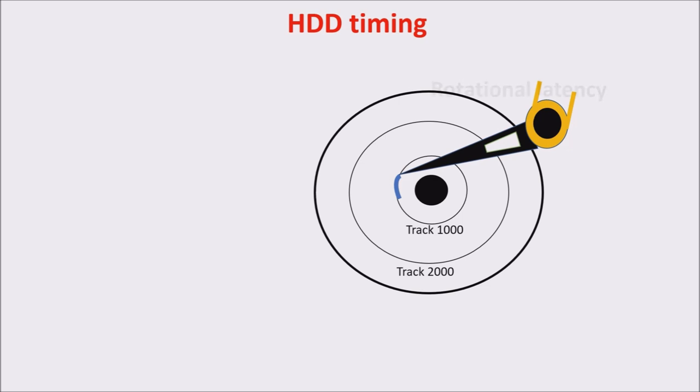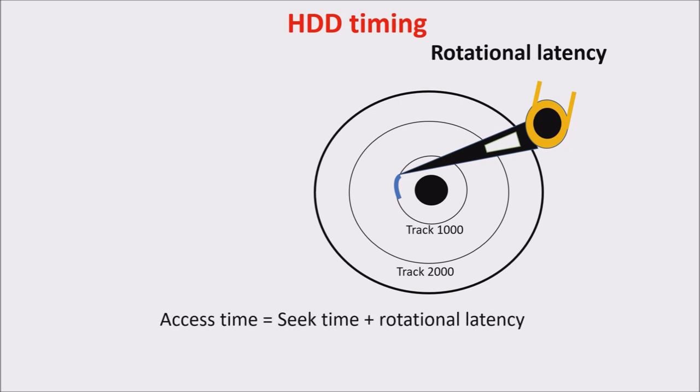Second, we have the rotational latency, which is the time required to reach the desired sector being already in the desired track. The sum between seek time and rotational latency is called access time. It is the time taken by the reading head to reach the desired track sector.